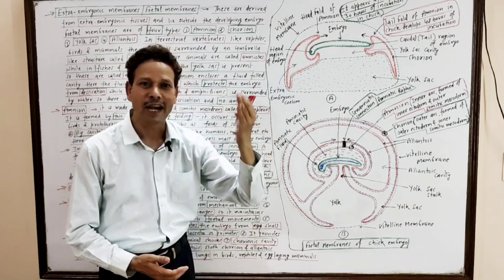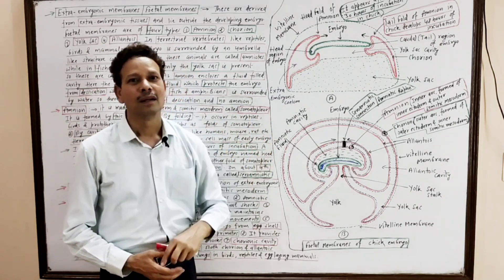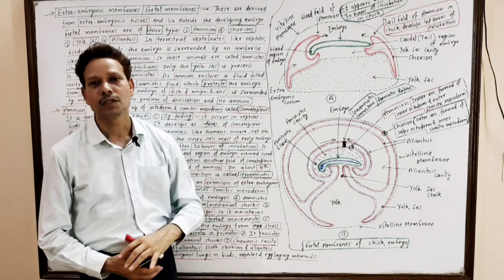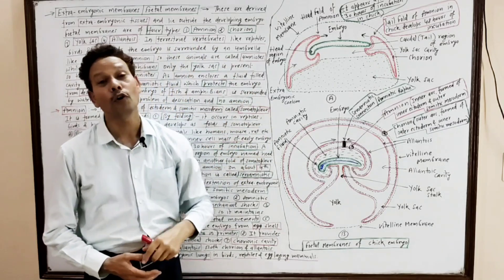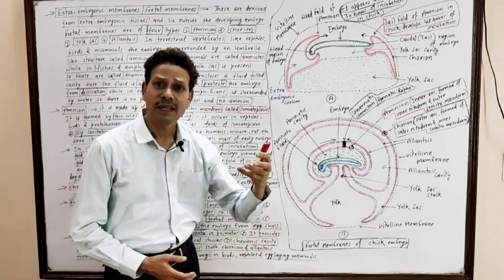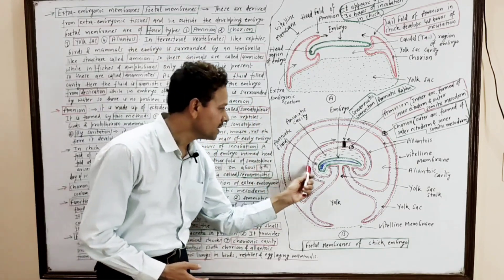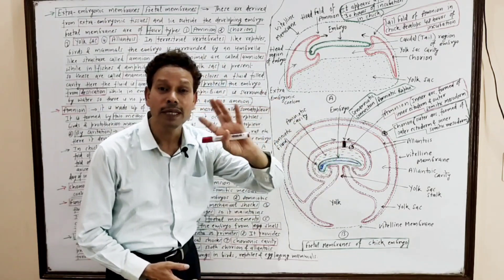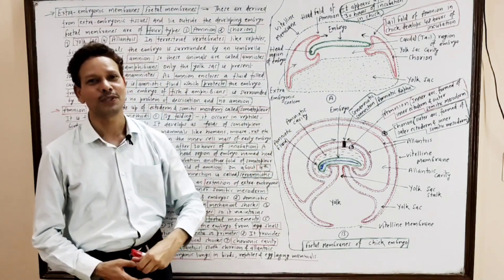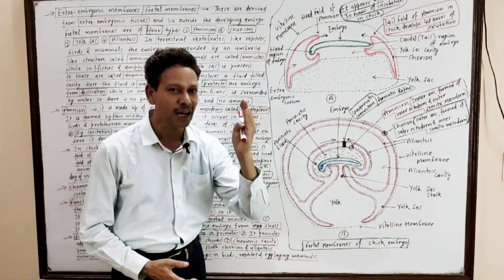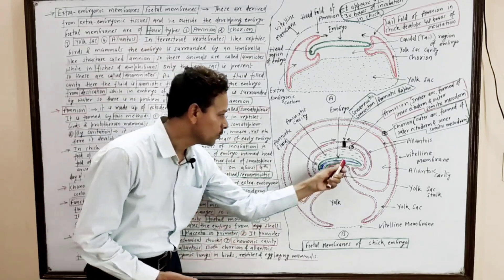Terrestrial vertebrates like reptiles, birds, and mammals are called amniotes. In the case of fish and amphibians, which are found in aquatic conditions, their embryos remain surrounded by water, so the amnion is absent — these are called anamniotes.